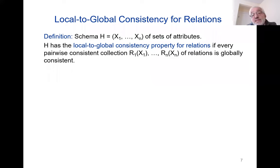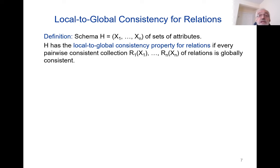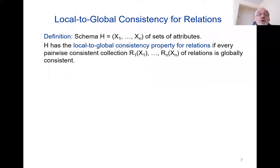Now we address the structural aspects: under what circumstances is local consistency equivalent to global consistency? We have seen that global consistency implies local consistency. A database schema is a collection of sets of attributes. We say that a schema has the local-to-global consistency property for relations if whenever you have relations that are pairwise consistent, then they are globally consistent. Local-to-global consistency holds for a schema if for all relations of the schema, local consistency implies global consistency.